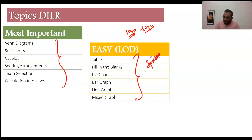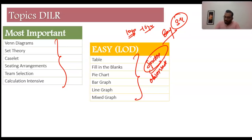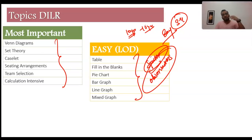This year we had a graph called a spider graph in CAT 2019, and it was so easy — 3-4 minutes and you're getting one set done and dusted. It was purely observation-based: no pie chart, no calculation, simple LOD. Plus calculation, seating arrangement in 2019, and Venn diagram in 2019 — you've seen all of these.